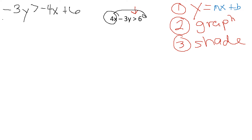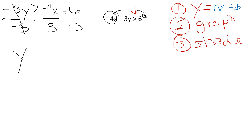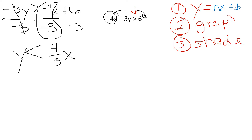I need to get rid of that negative 3. I am multiplying it to the Y. So to undo that, I have to divide by negative 3. Because we're dealing with an equation, I have to divide every term by negative 3. That technically becomes a 1 — it kind of goes away. Because I divided by a negative, the direction of my inequality flips. It only flips if I'm dividing by a negative. Now, negative 4 and negative 3 is going to become my coefficient.